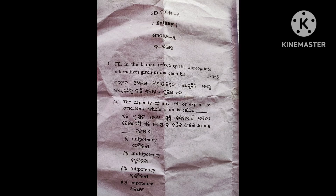We are going to discuss a short question. The capacity of any cell or explant to generate a whole plant is called totipotency. The process is called totipotent cell. The right answer is option 3, that is totipotent cell.